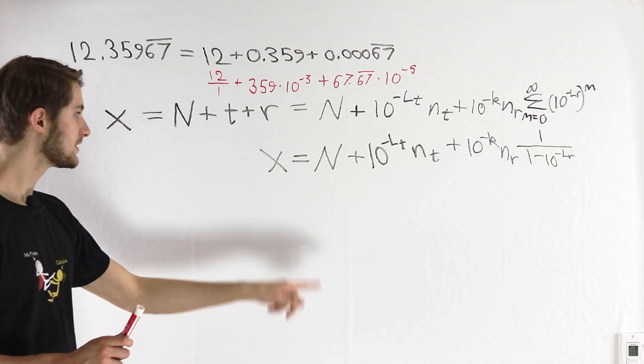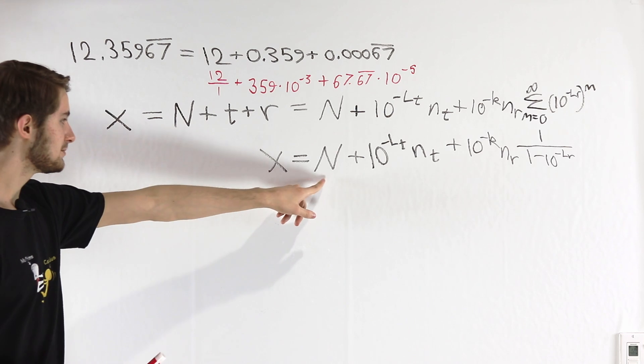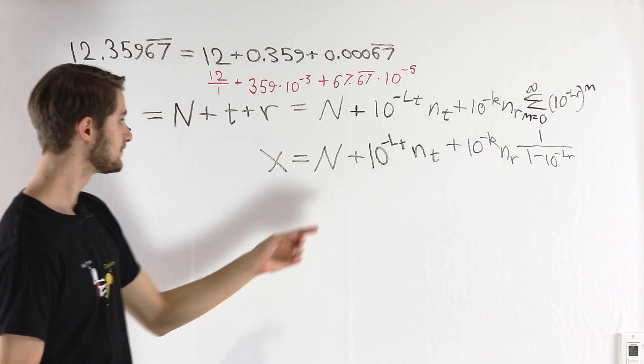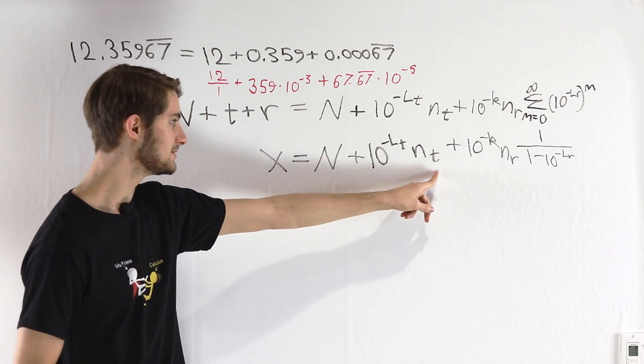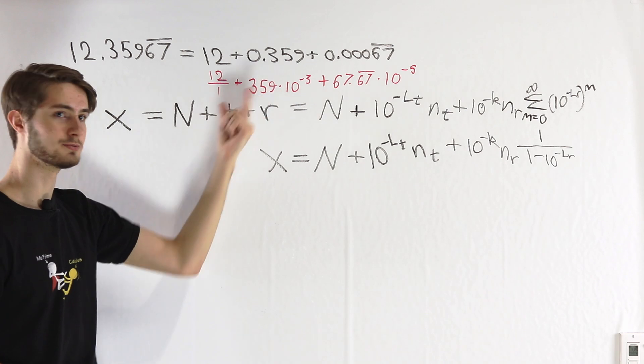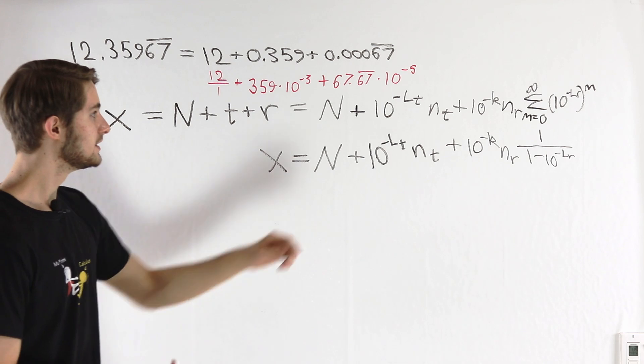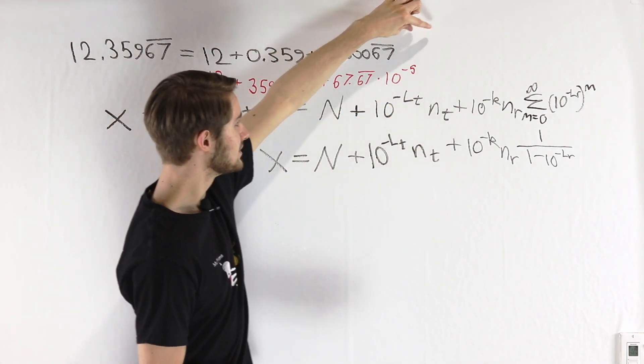So this is one way we can express our number with a repeating decimal X. We can add up first the original integer N to the left of the decimal place, plus 10 to the negative l_t times n_t, that's the terminating decimal part, and then plus this part here which represents the evaluation of a geometric series where we add up every single instance of that repeating decimal sequence.